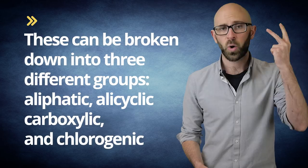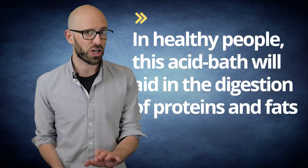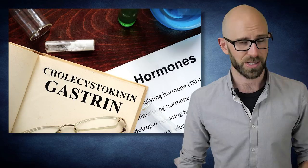Importantly, chlorogenic acid will also promote increased acid production by your stomach, elevating the acidic environment. In healthy people, this acid bath will aid in the digestion of proteins and fats. The stomach responds to the acid production by moving its contents more quickly into your small intestine. Increased acid levels will also trigger the release of gastrin and cholecystokinin, which provokes the aforementioned peristalsis.